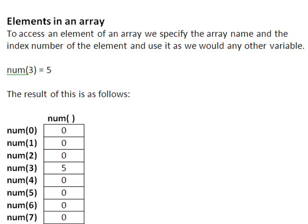For example, suppose we want to store the value 5 in the element whose index is 3. We would write num(3) equals 5. And when this line is executed, the value 5 will be stored in num(3) and the array will now look like the following.